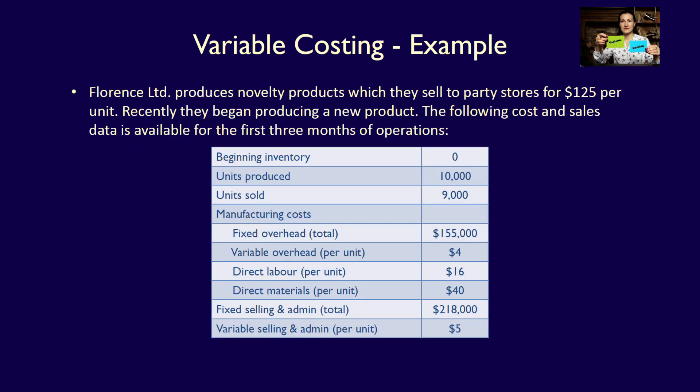Let's use the same example we used to produce an absorption costing income statement, but this time prepare a variable costing income statement instead. Florence Limited produces novelty products, which they sell to party stores for $125 per unit. Recently they began producing a new product. The following cost and sales data is available for the first three months of operations, January 1st through to March 31st.